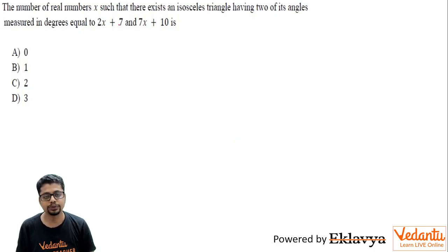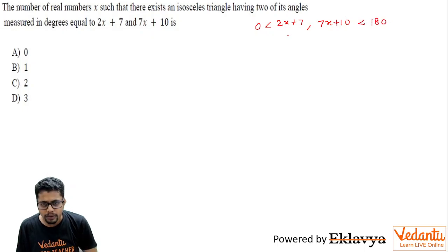Since 2x plus 7 and 7x plus 10 are supposed to be angles in degrees, first of all 2x plus 7 and 7x plus 10 both should be greater than zero because they are angles of a triangle, and both should be less than 180. Of course, in degrees I am talking about. x is supposed to be in degrees because 2x plus 7 and 7x plus 10 are in degrees.